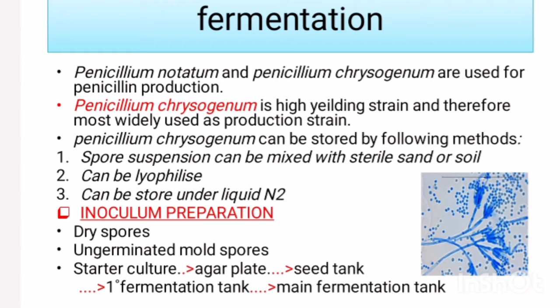Penicillium notatum and Penicillium chrysogenum are used for penicillin production. Penicillium chrysogenum is a high-yielding strain and therefore the most widely used production strain. It can be stored under liquid nitrogen, by lyophilization, or as a spore suspension mixed with sterile sand or soil.